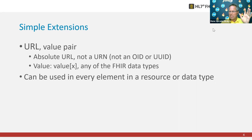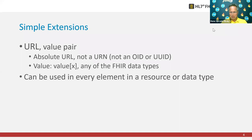Simple extensions are a key-value pair — and that goes for basically all extensions. The key is a URL, and it has to be a full URL; you're not allowed to use a URN. So it's tempting to use an OID or UUID, but that's not the intent — the requirement is that it shall be a full URL. The value of the key-value pair can be any data type that exists in FHIR, and the extension definition determines what that data type is.